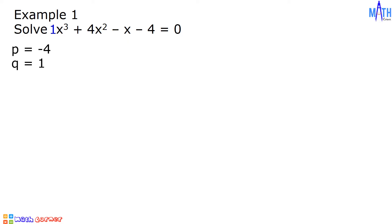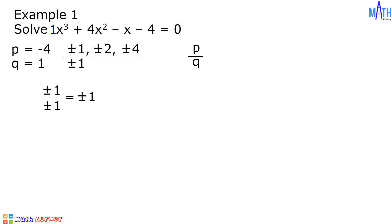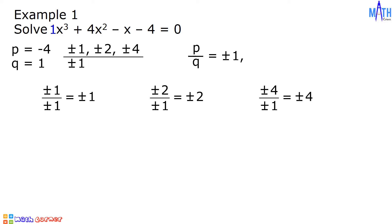Factors of negative 4 are positive/negative 1, positive/negative 2, and positive/negative 4. Factors of 1, we have positive/negative 1. To determine the list of possible roots, let us divide each p by each q. Positive/negative 1 divided by positive/negative 1 equals positive/negative 1. Positive/negative 2 divided by positive/negative 1 equals positive/negative 2. And positive/negative 4 divided by positive/negative 1 equals positive/negative 4. So p over q equals positive/negative 1, positive/negative 2, and positive/negative 4. This is the list of possible roots of x cubed plus 4x squared minus x minus 4 equals 0.